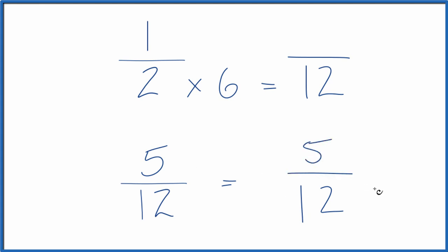I'd have 5 twelfths. Same thing. With this up here, I can't just multiply the denominator by 6. I have to multiply the numerator by 6 as well.